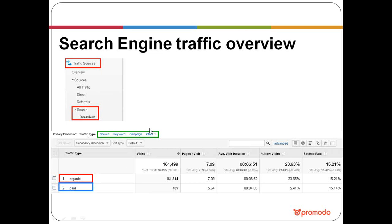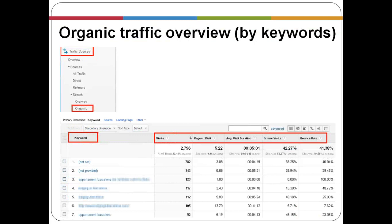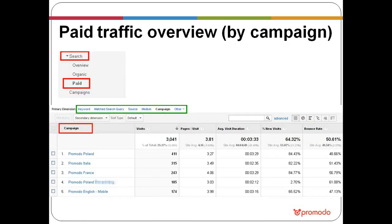The organic traffic overview shows the traffic report broken down by keywords and how many visits each keyword has driven. For paid traffic, click on paid traffic and choose campaign, medium, source, or keyword to see how many visits each campaign has driven and whether those visits were relevant.